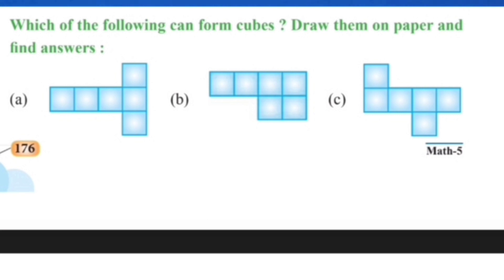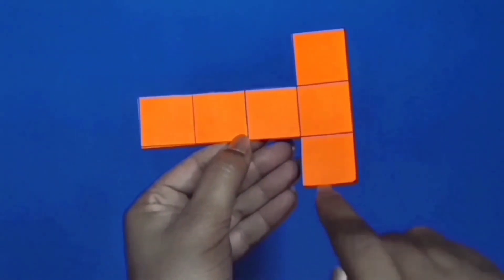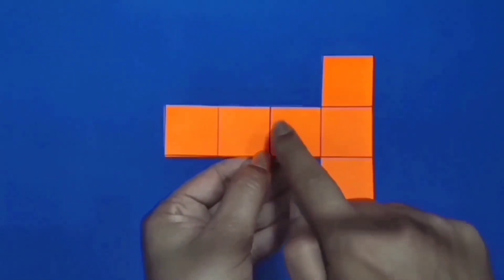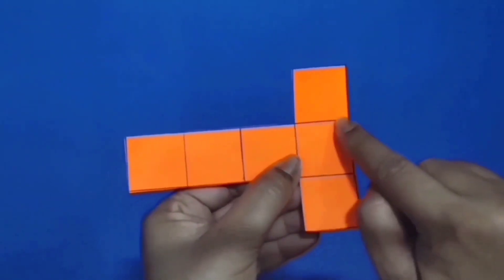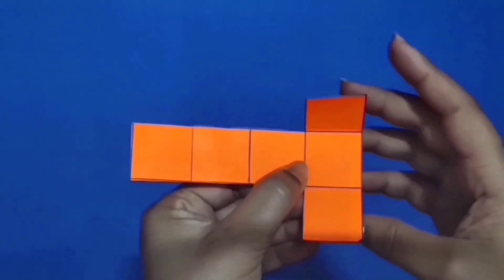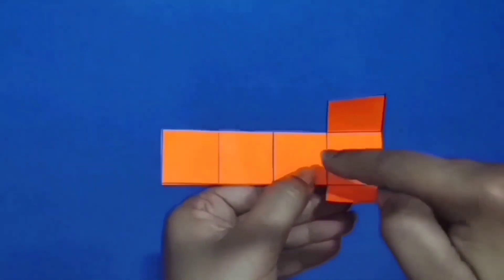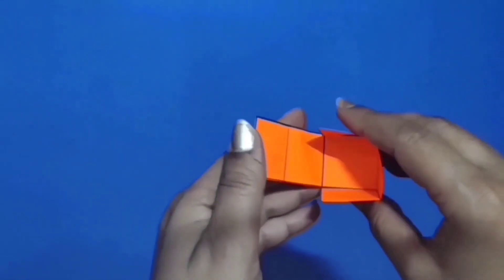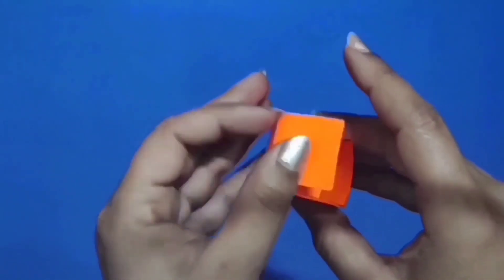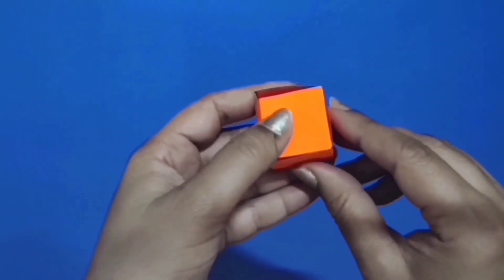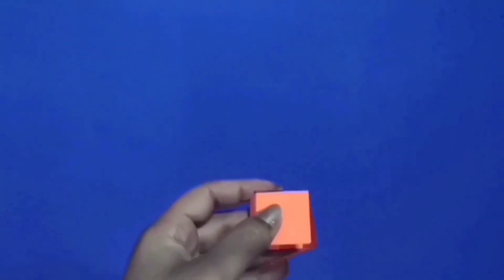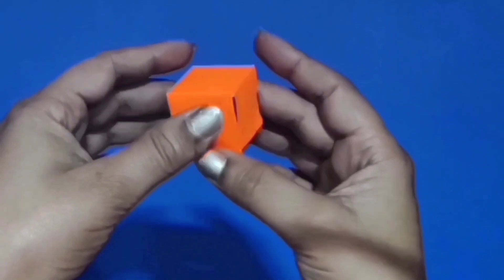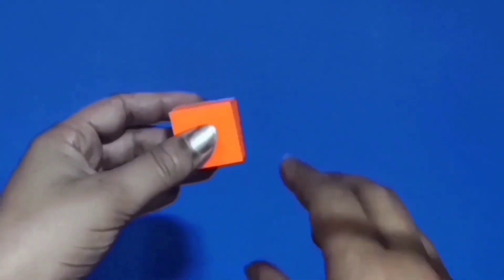Dear students, we have drawn the picture given in part A on a paper. This net contains 6 boxes, all of equal size. We will fold these boxes to make a 3D shape from this 2D shape. By folding these boxes, we have come out with a 3D shape that has 6 faces, all of equal size. So, this is a cube.